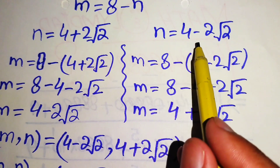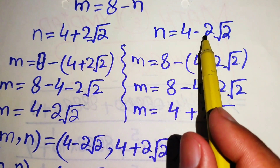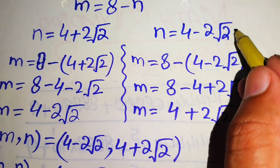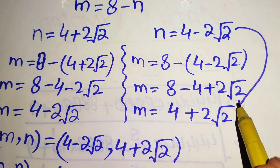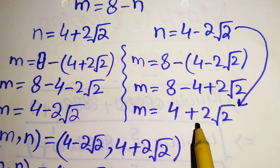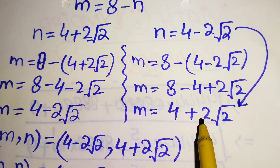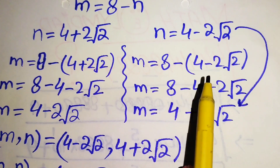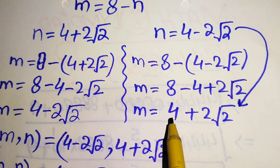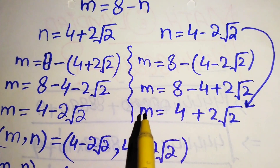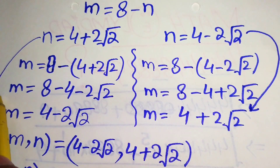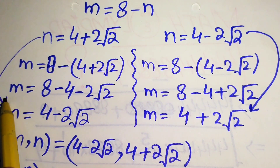The second solution is: m equals 4 plus 2 root 2 and the corresponding n equals 4 minus 2 root 2. These two values of m and n correspond to each other in their respective solution pairs.